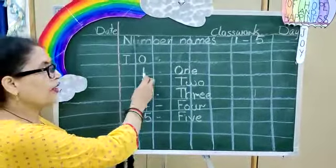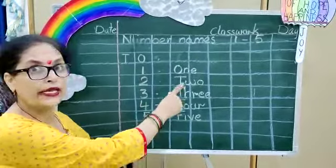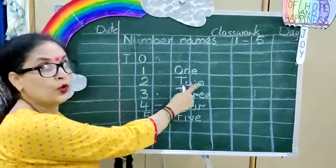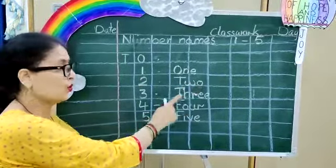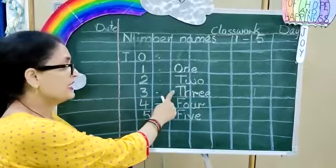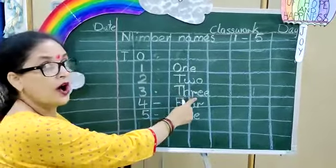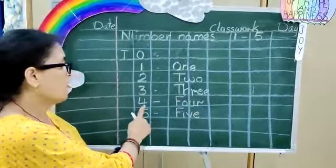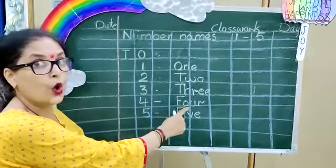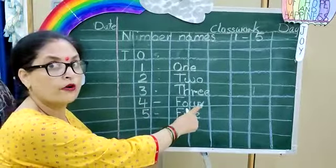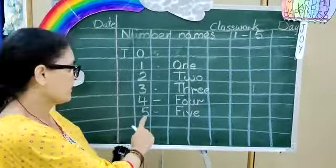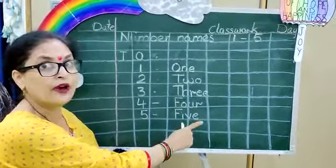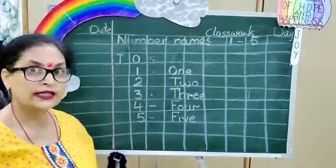See — 1: O, N, E — ONE. 2: T, W, O — TWO. 3: T, H, R, E, E — THREE. 4: F, O, U, R — FOUR. 5: F, I, V, E — FIVE.